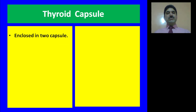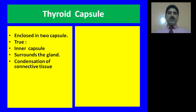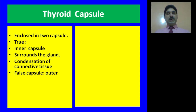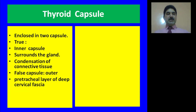The thyroid is enclosed in two capsules. The first is called the true capsule, also called the inner capsule. It surrounds the gland and is derived from condensation of the connective tissue. The second capsule is called the false capsule or outer capsule of the thyroid gland. This capsule is derived from the pretracheal layer of the deep cervical fascia.